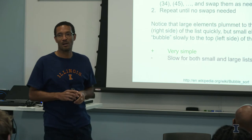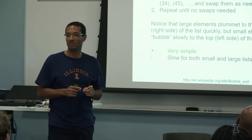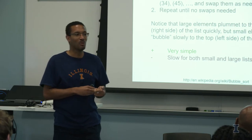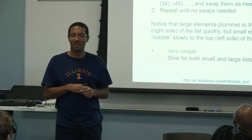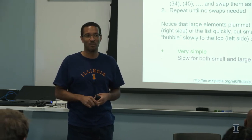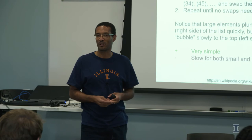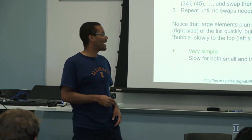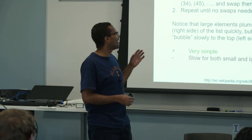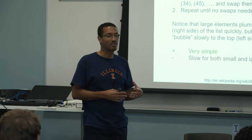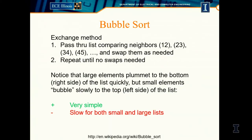Bubble sort is sometimes the algorithm people think of if they haven't studied computer science. Obama famously, when asked a technical question at Google, replied that he knows he's not going to use bubble sort — it's the pun of every bad computer science joke. It's very simple but slow for both small and large lists. The method is: pass through the list comparing adjacent neighbors and swap them if needed.